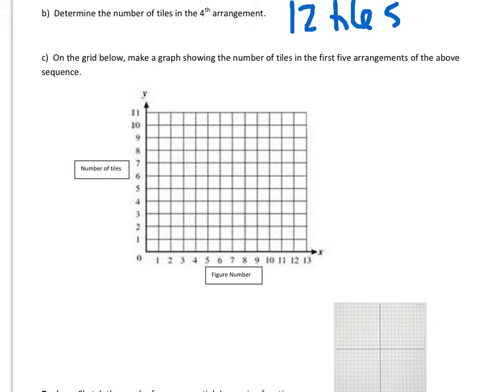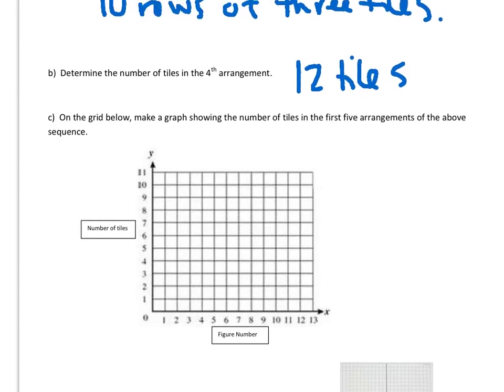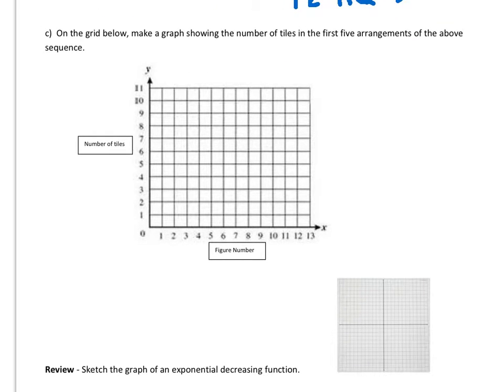And then on the grid below, make a graph showing the number of tiles in the first five arrangements of the above sequence. So one had three and two had six. So let's see, one for the figure number. And then the number of tiles was six. Oops, sorry, did I say three? Erase that. One had three. And two had six. That means three had nine. And four had twelve, which is kind of slightly off. So we're only going to do the first four arrangements. It'll look something like that.